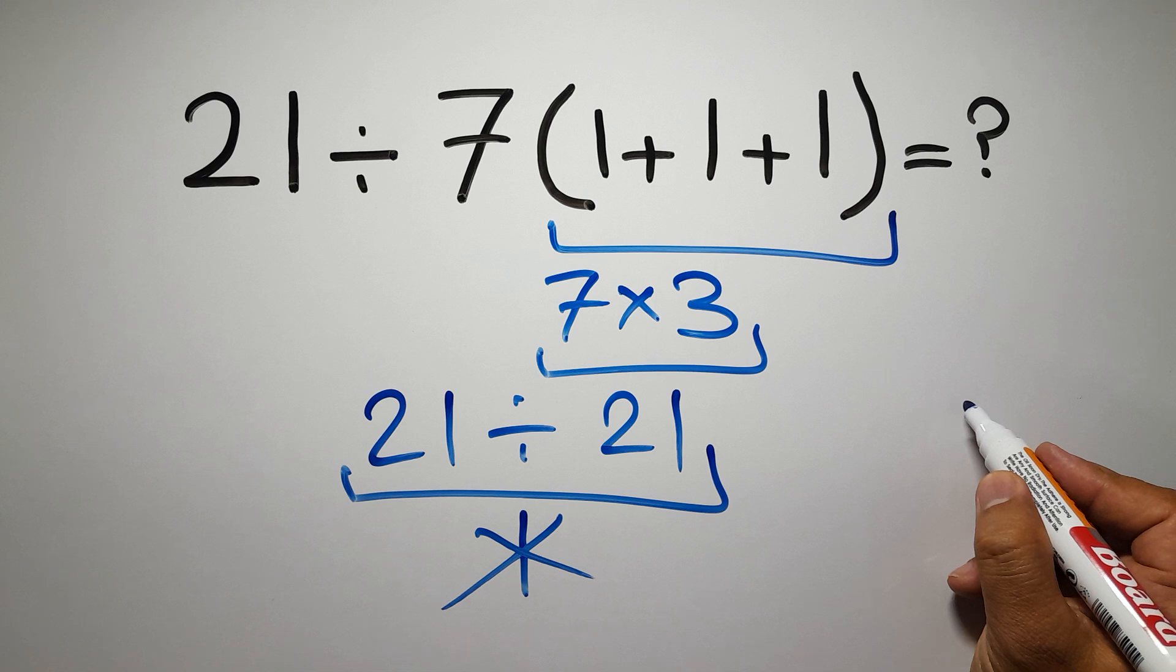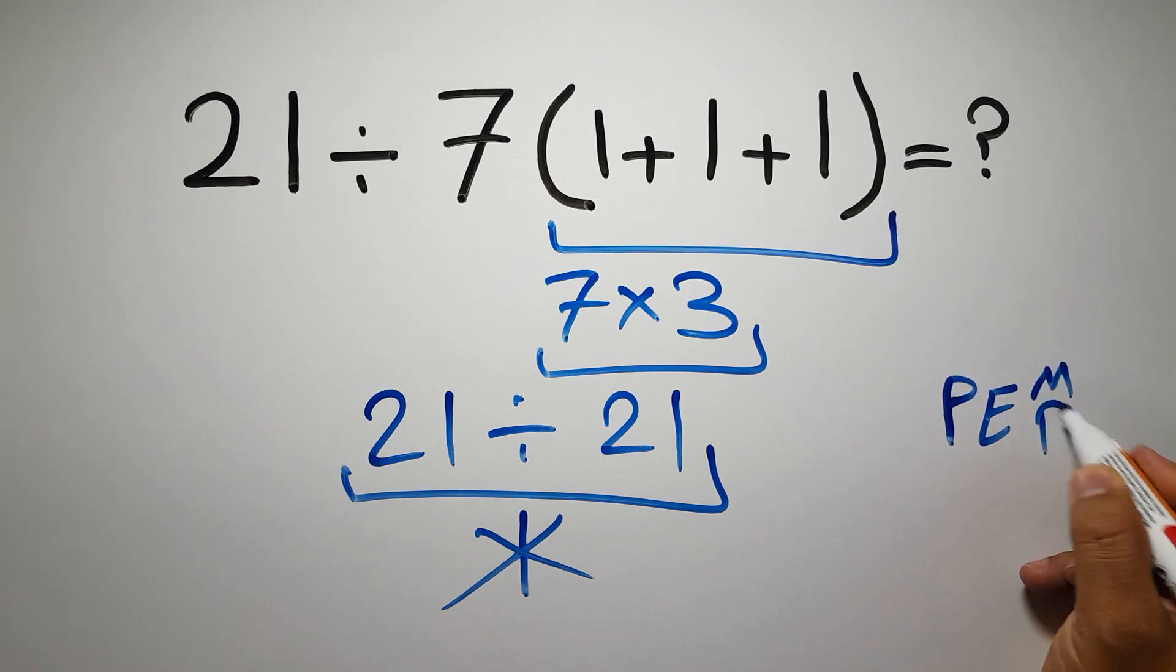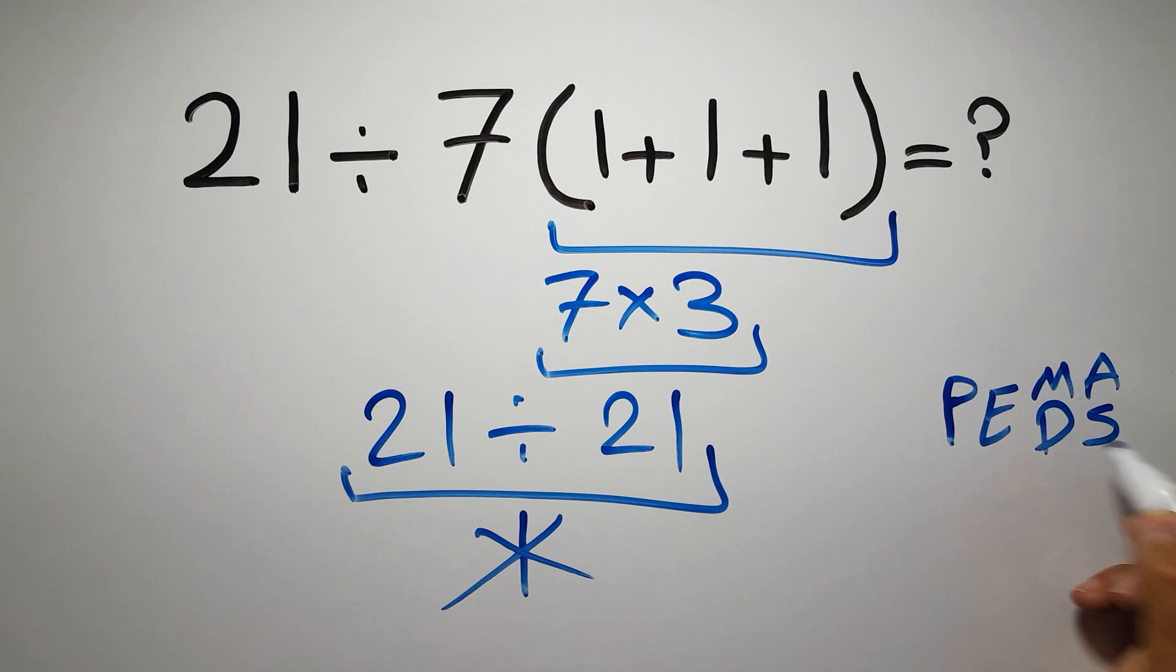Because according to the order of operations, first we have to do parentheses, then exponents, then multiplication or division, and finally addition or subtraction. Remember that multiplication and division have equal priority, and we have to work from left to right, and the same applies to addition and subtraction.